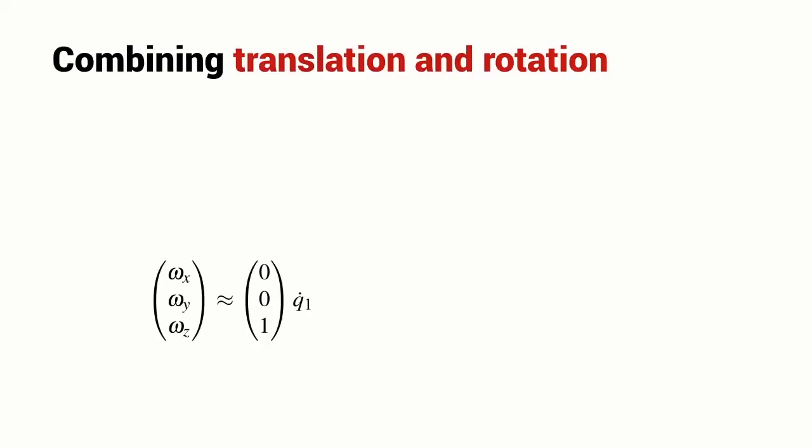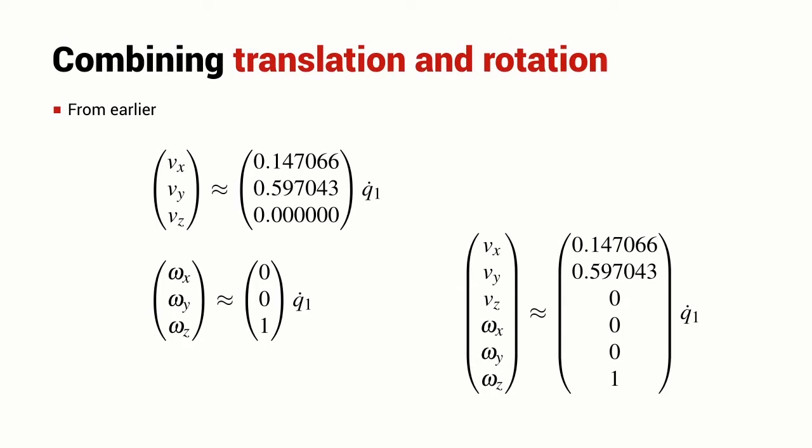And here's that expression again. And I bring back the expression we computed earlier for the translational velocity of the robot's end effector, and I can combine these two by stacking up the two vectors and bringing out the common term Q1 dot. And I now have this relationship between the spatial velocity of the robot's end effector and the velocity of the robot's first joint angle.